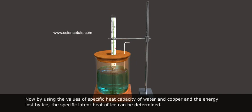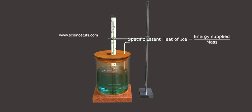Now, by using the values of specific heat capacity of water and copper and the energy lost by ice, the specific latent heat of ice can be determined. Therefore, specific latent heat of ice is equal to energy supplied by mass. L is equal to Q by M.